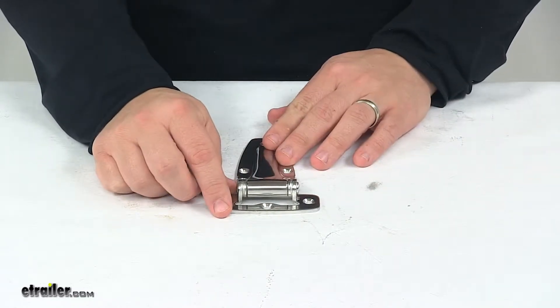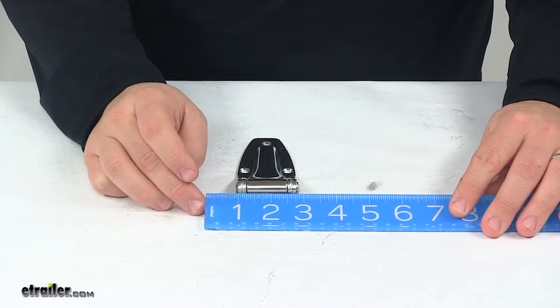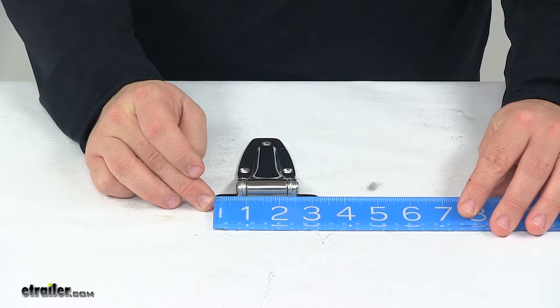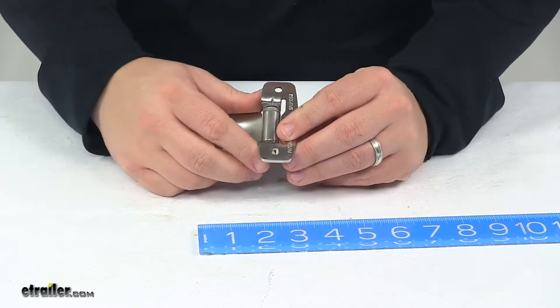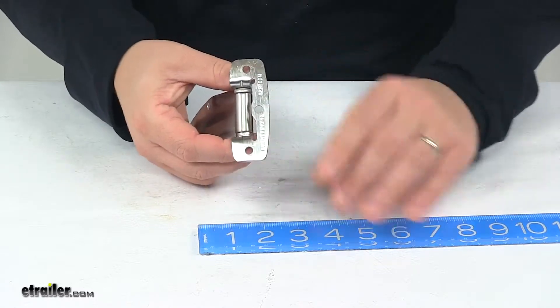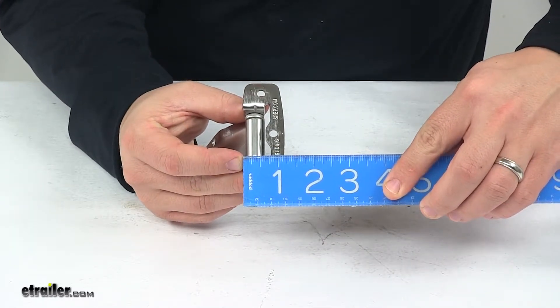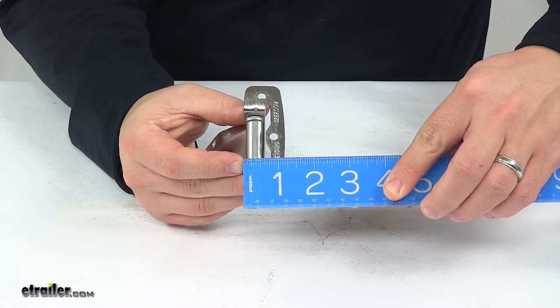The base of the hinge measures three and one-quarter inches long by about one and three-sixteenths inches wide.